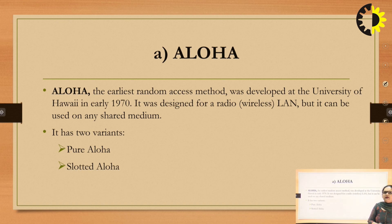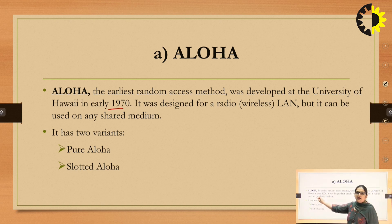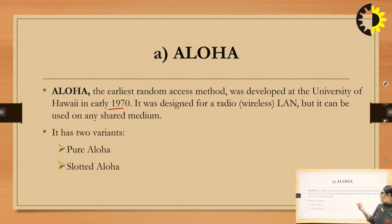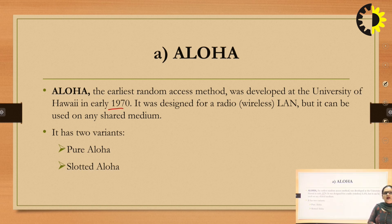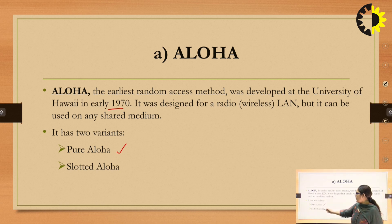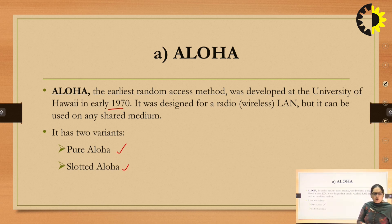Aloha was the earliest method and was developed at the University of Hawaii in the early 1970s. It is the simplest protocol, designed for a radio or wireless local area network, but it can be used on any shared media. There are two variants of Aloha protocol: one is Pure Aloha and another is Slotted Aloha.